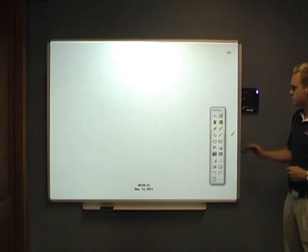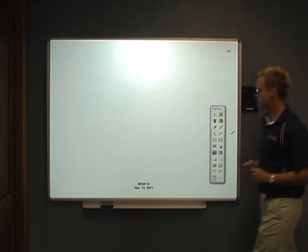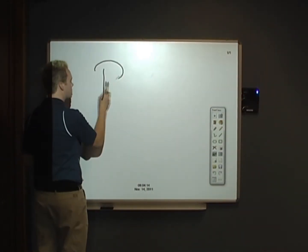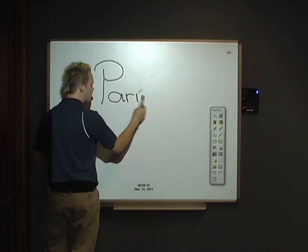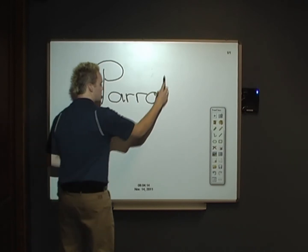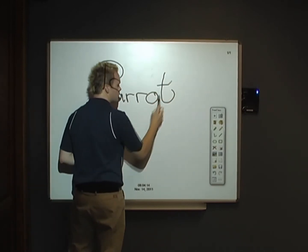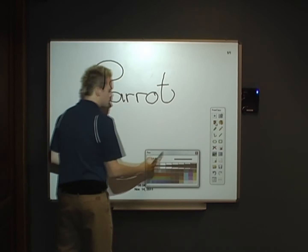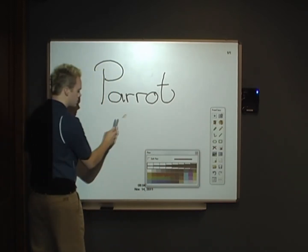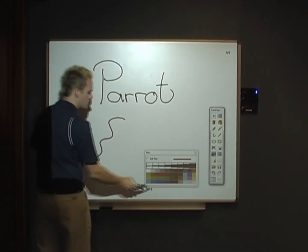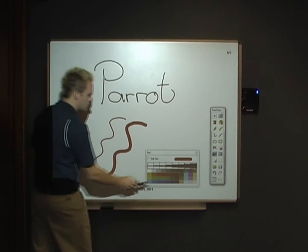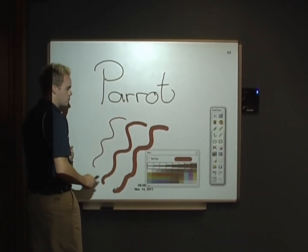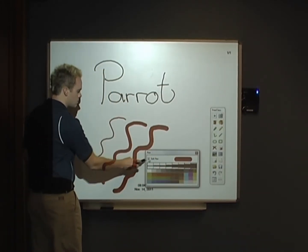On your free class toolbar click on the whiteboard mode. Once here you can immediately start writing. You get your standard colors you can change and your different pen thicknesses as well. You have your soft pen options available here.